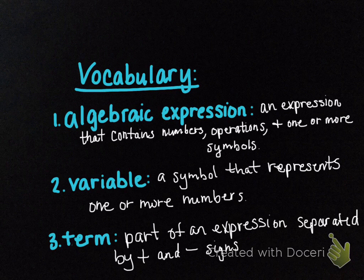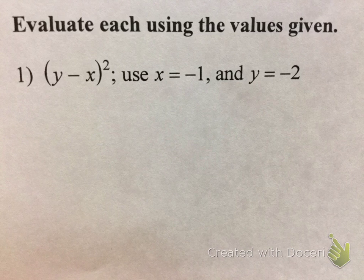This is part of an expression separated by addition and subtraction signs. So what does that mean? If I had 6x plus 3, you would have two terms. Your first term would be the 6x, and then your last term would be the 3. Notice that in between there's an addition sign.